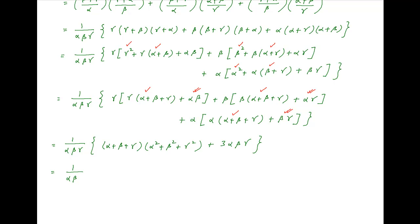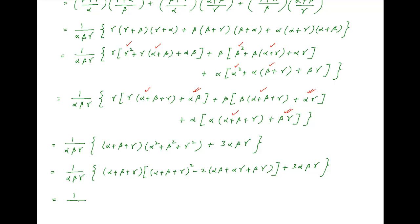This equals (1/alpha·beta·gamma) times: (alpha + beta + gamma)·[(alpha + beta + gamma)² - 2·(alpha·beta + alpha·gamma + beta·gamma)] + 3·alpha·beta·gamma. We know the values of alpha + beta + gamma, alpha·beta·gamma, and alpha·beta + alpha·gamma + beta·gamma. The sum of roots taken two at a time equals (1/-r)·[p·(p² - 0) + 3·(-r)], which simplifies to (p³ - 3r)/(-r).